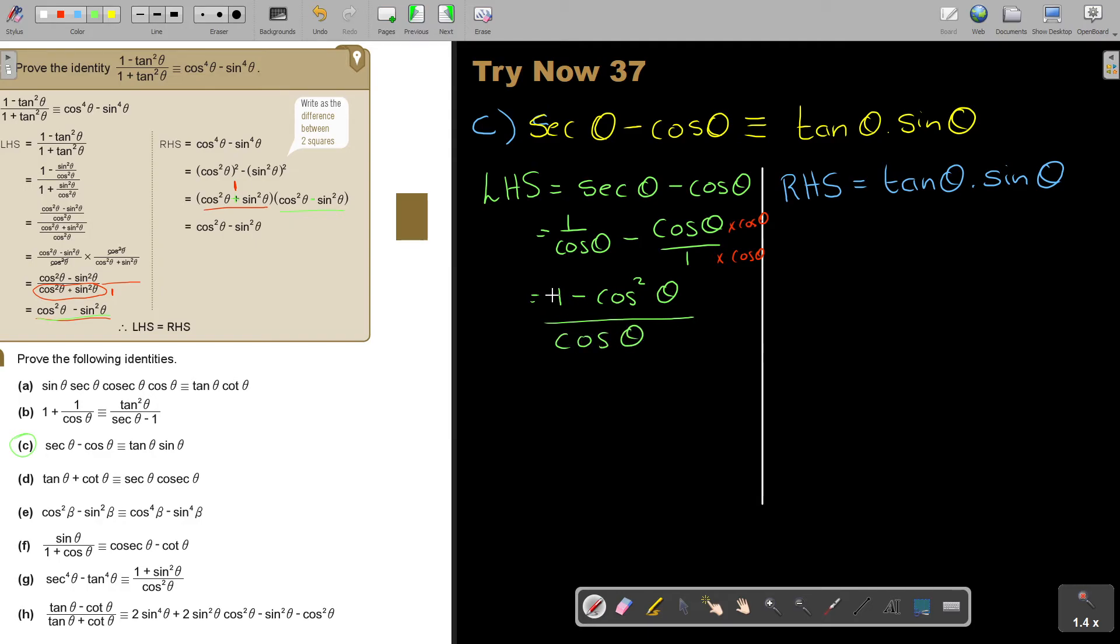Now, as soon as you see 1 minus cos square theta or 1 minus sin square theta, you know it's the opposite. It's both coming from this one. Sin square theta plus cos square theta is 1. So, as soon as I say, I take this one over. So, sin square theta is 1 minus cos square theta. So, this is going to be sin square theta over cos theta.